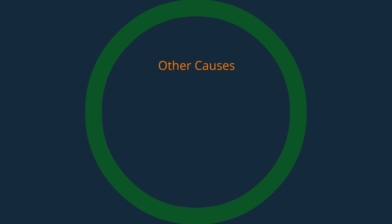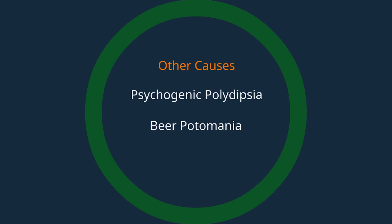Other causes include psychogenic polydipsia, hypokalemia, and tea and toast diet. These states are defined as overwhelming the system with water, leading to hypotonicity and the absence of ADH as the body attempts to make more — particularly dilute — urine.